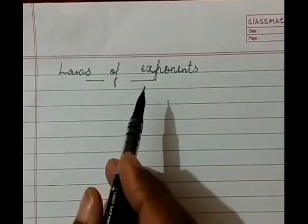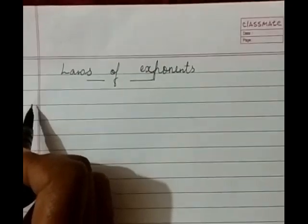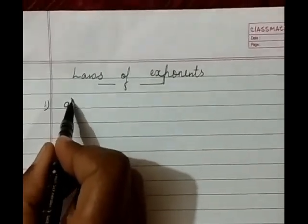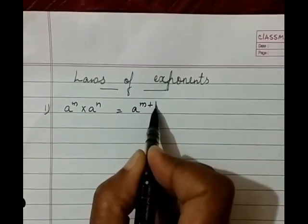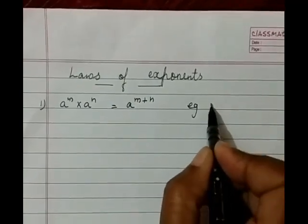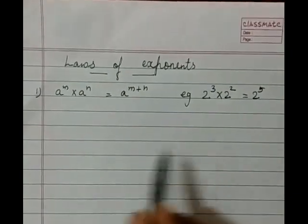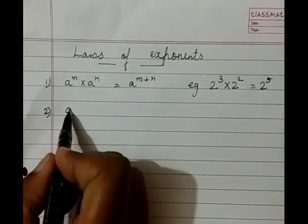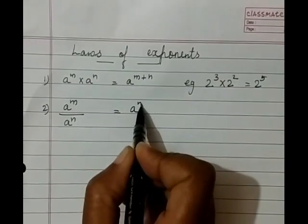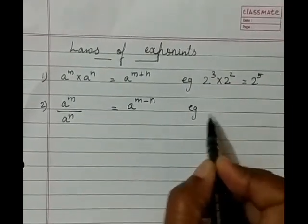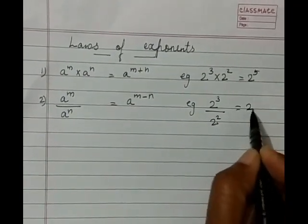Laws of exponents. Both positive and negative exponents hold the laws of exponents. First: a to the power m multiplied by a to the power n equals a to the power m plus n. For example, 2 to the power 3 multiplied by 2 to the power 2 equals 2 to the power 5. Next: a to the power m divided by a to the power n equals a to the power m minus n. For example, 2 to the power 3 divided by 2 to the power 2 equals 2 to the power 1.